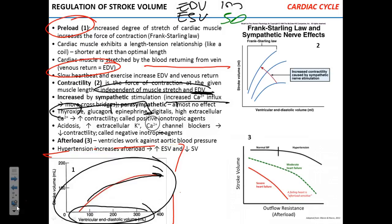Compounds that block calcium channels, increased extracellular potassium, and acidosis — they all decrease contractility. Acidosis is a frequent metabolic effect of diabetes. In that case, the side effect of acidosis is weakened heart contractions, which will affect performance and actually aggravate the metabolic acidosis because the kidneys won't be able to compensate.